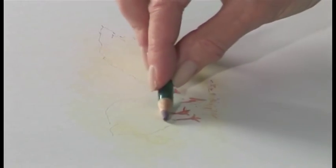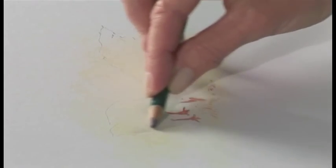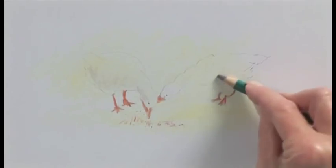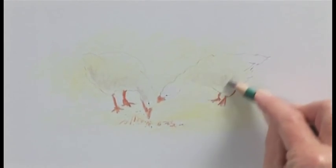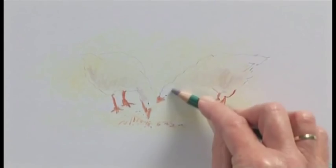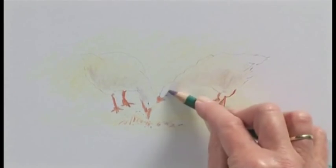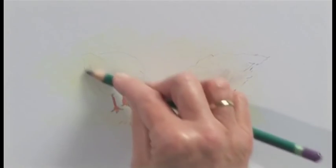Now using Red Violet Lake which is a soft mauve color, using the side of the pencil we'll just blend a little bit of shadow onto the bodies of the ducks, just a little bit of shadow. It's a lovely shadow color and we're actually using this color because it's a complementary to the yellow, the soft mauve.